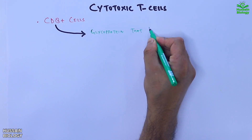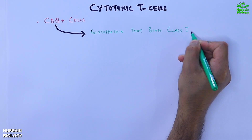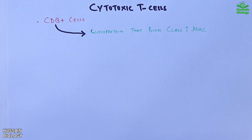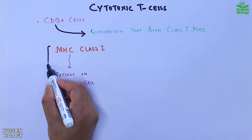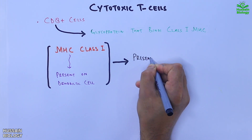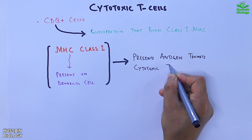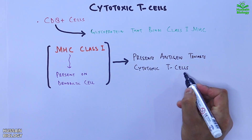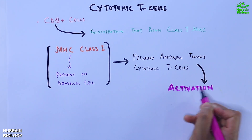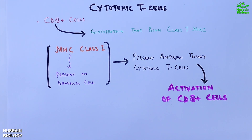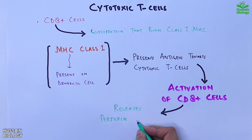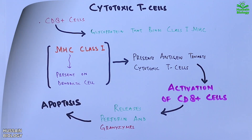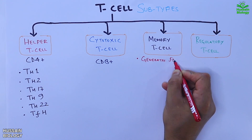The cytotoxic T cell, also known as CD8-positive T cell, expresses the CD8 glycoprotein on the cell surface that binds MHC class I molecules. MHC class I is present on dendritic cells and presents antigen to the cytotoxic T cell. Upon antigen presentation, the CD8-positive cell becomes activated, and this activated cytotoxic T cell releases perforin and granzymes, which mediate apoptosis.